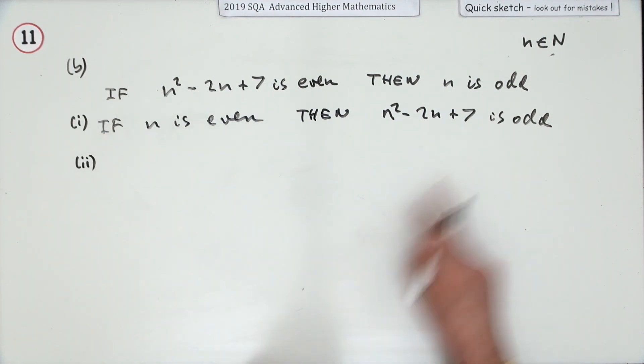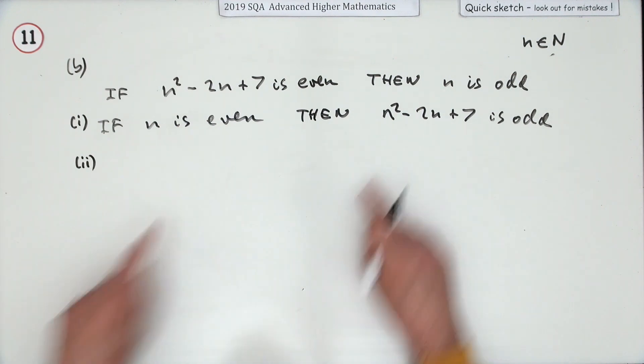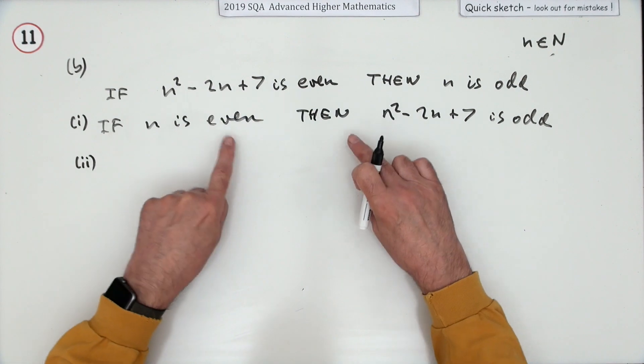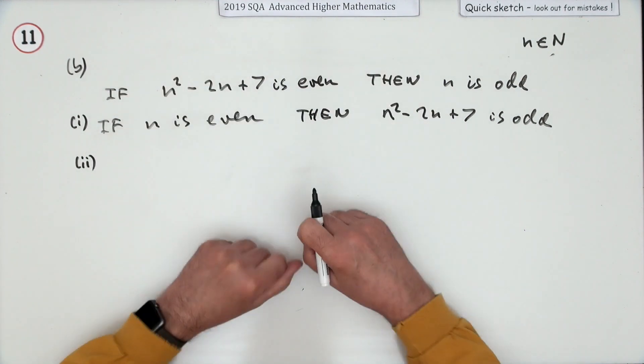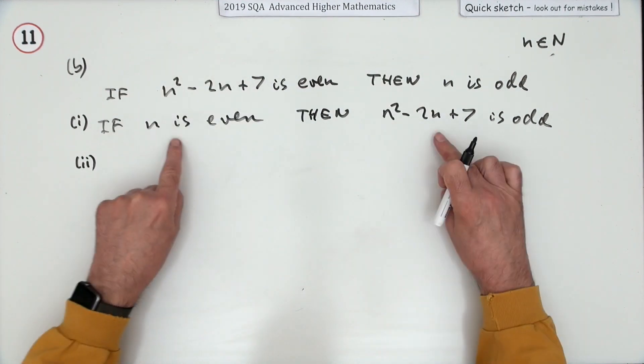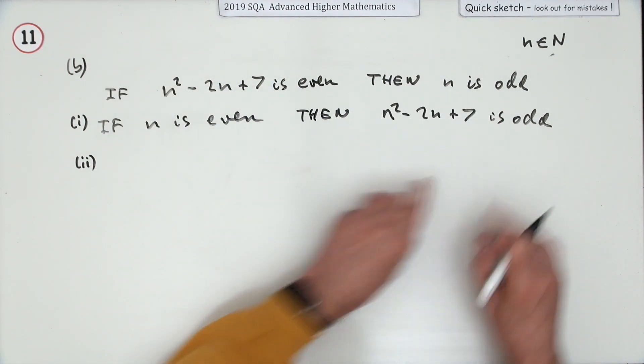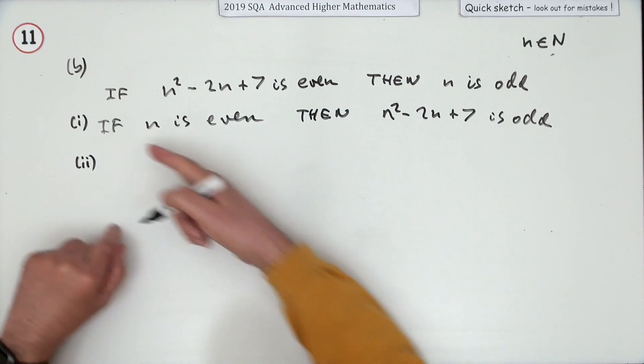Now you have to use that to prove this original statement, because the point about them is the contrapositive is logically equivalent to the original statement. So if you can prove this, it proves that one.